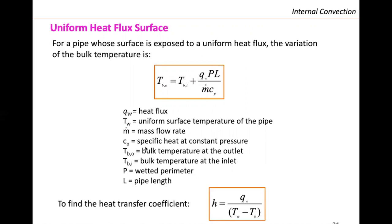In that equation, M is the mass flow rate, CP is the specific heat at constant pressure, T_BO is the bulk temperature at the outlet, T_BI is the bulk temperature at the inlet, P is the wet perimeter, and L is the pipe length. Finally, the heat transfer coefficient is the heat flux divided by delta-T.